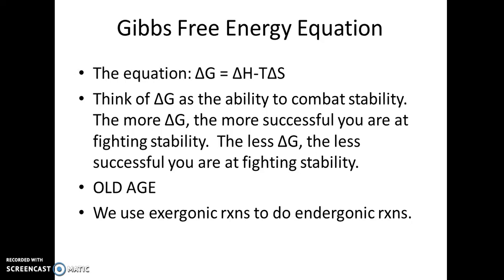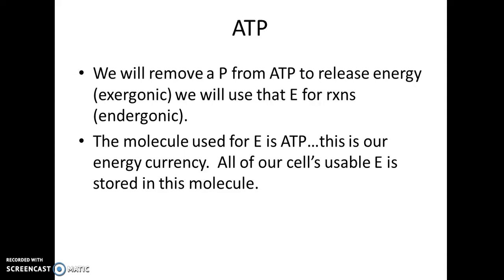We use exergonic reactions to do endergonic reactions. We remove a phosphate from ATP, and that releases energy — that's exergonic. We then use that energy for reactions, which is endergonic. The molecule used for energy in our cells is ATP — that is our energy currency, and all of our cells' usable energy is stored in this molecule.